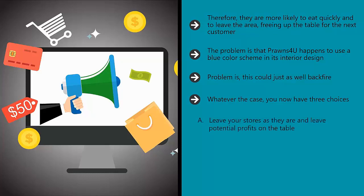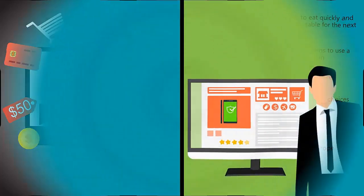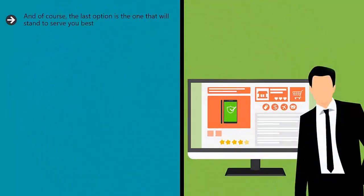A: Leave your stores as they are and leave potential profits on the table. B: Change the color of your stores and hope that this doesn't hurt your ranking. C: Run a split test. And of course, the last option is the one that will stand to serve you best.